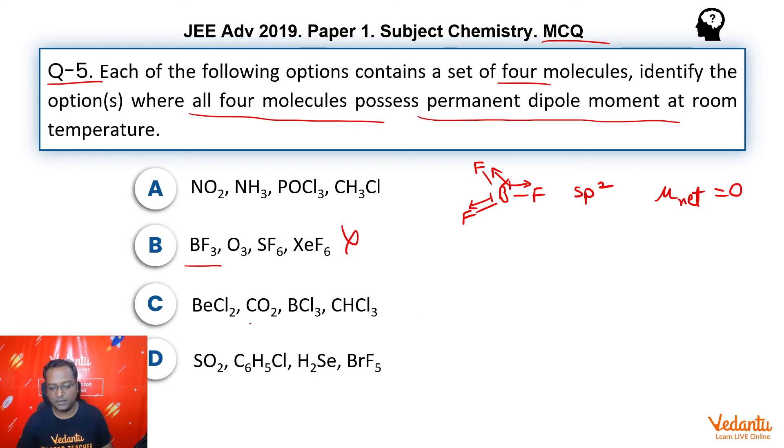Now, next, similarly, you can see CO2 here. CO2 structure is C double bond O, double bond O. This is 180 degree and therefore these two dipole moment vectors will also get cancelled away. So, mu net is again zero. So, cancelled.